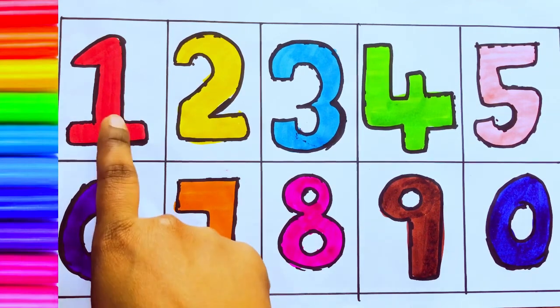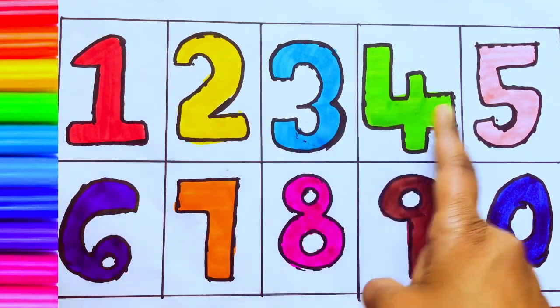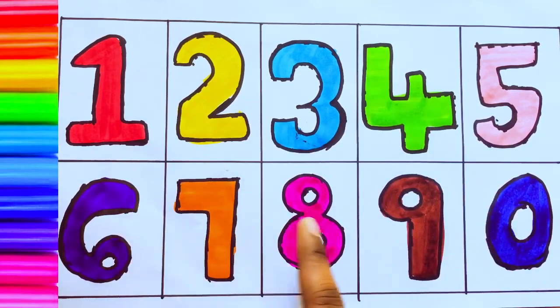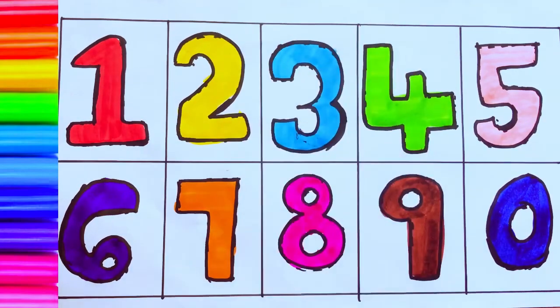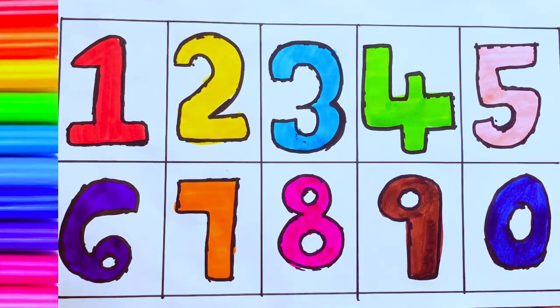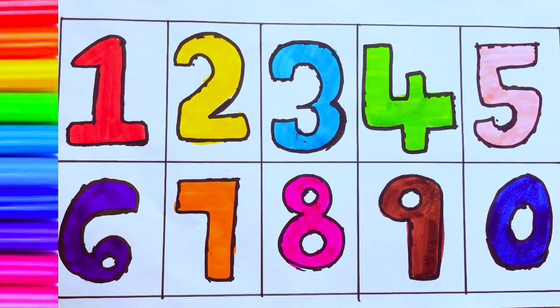Let's review the numbers: 1, 2, 3, 4, 5, 6, 7, 8, 9, 0. Okay, bye kids. Thanks for watching. Please subscribe to my channel. See you in the next video. Bye bye kids.